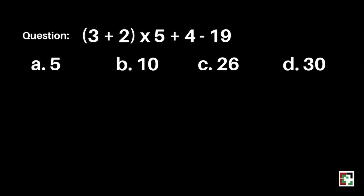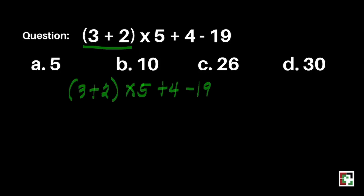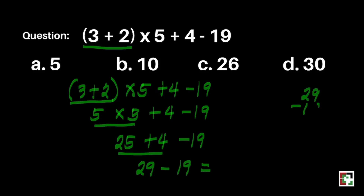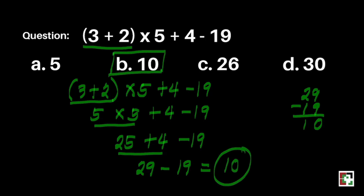Next question: the quantity of 3 plus 2, times 5 plus 4 minus 19. Is it A) 5, B) 10, C) 26, or D) 30? We do the groupings first: 3 plus 2 is equal to 5. So we have 5 times 5 plus 4 minus 19. Next, 5 times 5 is equal to 25. Then 25 plus 4 is equal to 29, minus 19 gives us 10. Our final answer is letter B.